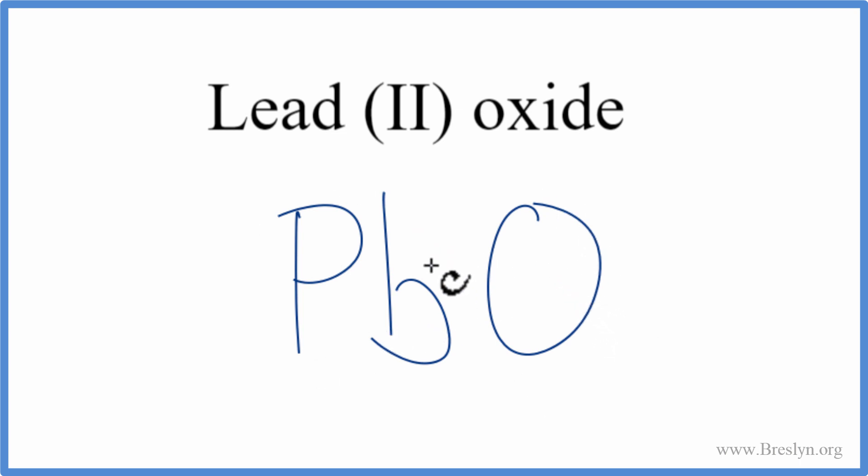For ionic compounds, we need to take into account the charge on each of the elements. Lead, that tells us right here in the name, it's lead(II), it has a 2+ ionic charge. Oxygen has a 2- ionic charge from the periodic table.